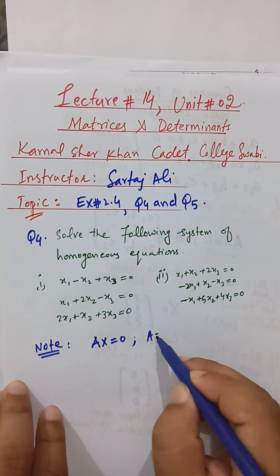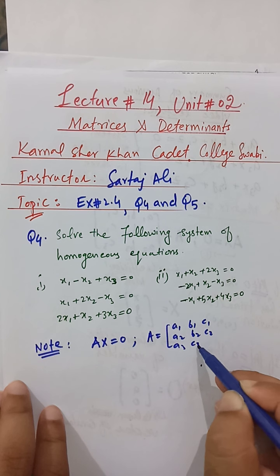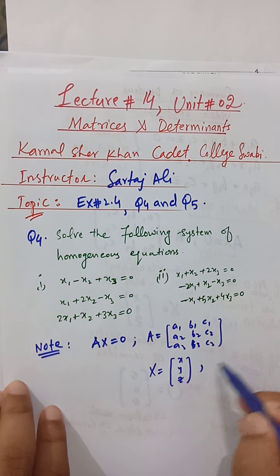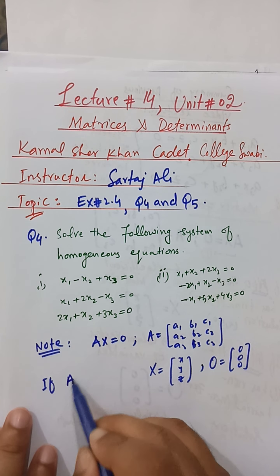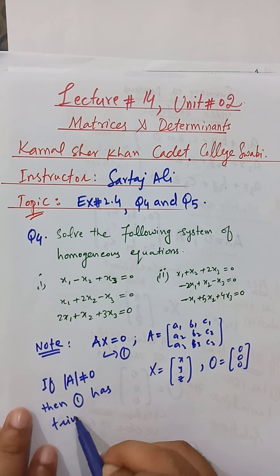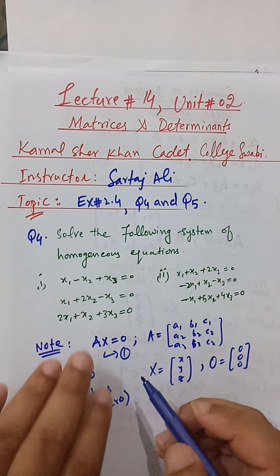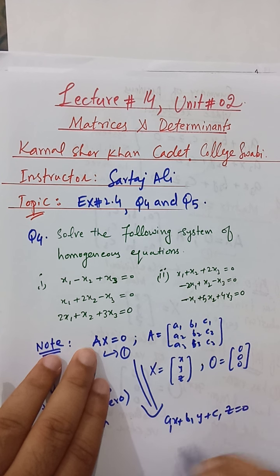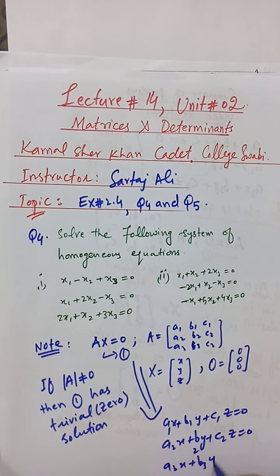Here O is the null matrix notation. A is the coefficient matrix with entries a1, b1, c1, a2, b2, c2, a3, b3, c3. This is the column vector of variables and the column vector of constants is the null matrix. So if the determinant of A is not equal to zero, then the system has a trivial solution. The matrix form is made from the system: a1x + b1y + c1z = 0, a2x + b2y + c2z = 0, and a3x + b3y + c3z = 0.